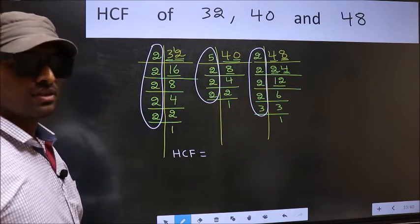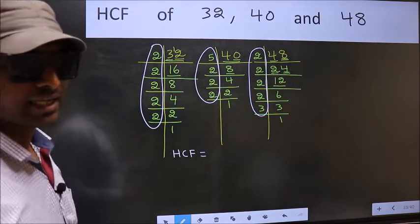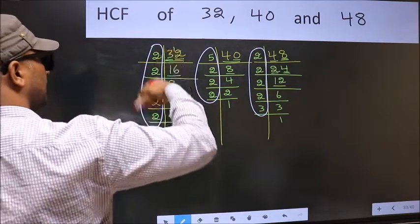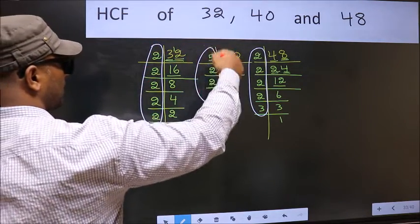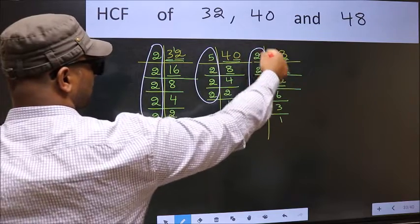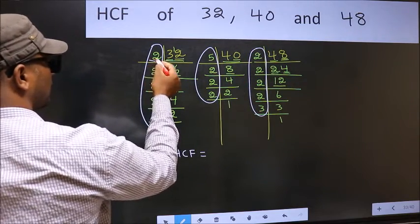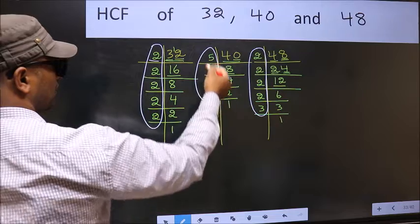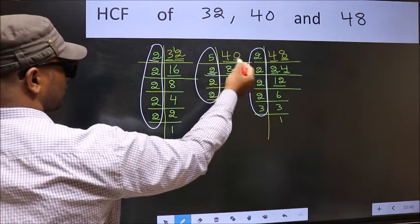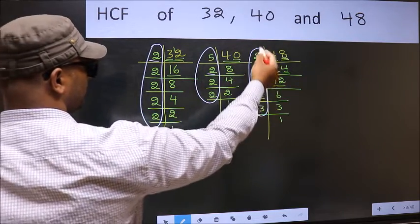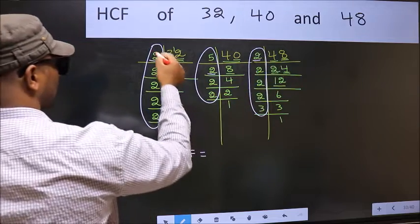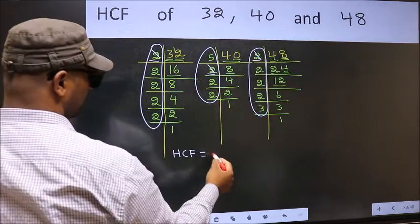So now let us find the numbers which are present here, and here, and also here. Starting with the number 2. Do we have 2 here? Yes. So go to the next place. Do we have 2 here? Yes. So cut 2 right here.